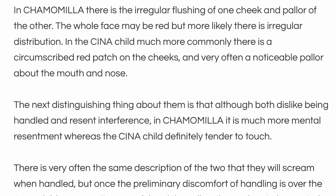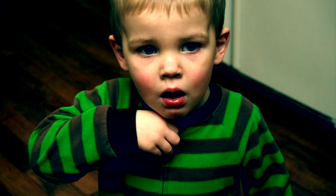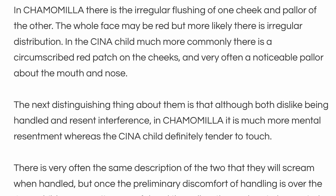In Chamomilla there is irregular flushing of one cheek and pallor of the other — the whole face may be red, but more likely there is irregular distribution. In the Sina child, much more commonly there is a circumscribed red patch on the cheeks and very often a noticeable pallor about the mouth and the nose.